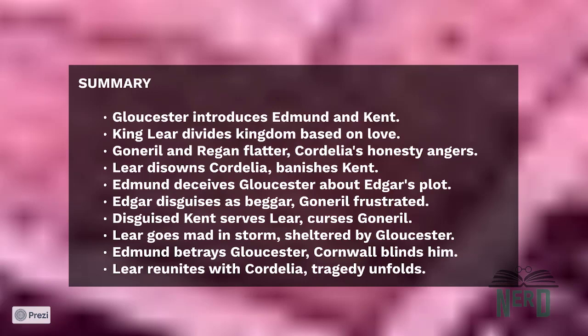Act 4: Out in the storm, Lear finds shelter where Edgar has also taken refuge, still disguised as the beggar. Before separating, the Fool, the mad king, and the disguised insane beggar become unlikely companions. Edgar finds Gloucester wandering the heath alone and in agony. Since his father is blind, Edgar leads the despairing man to the coast and helps him along the journey to come to an acceptance of his life.